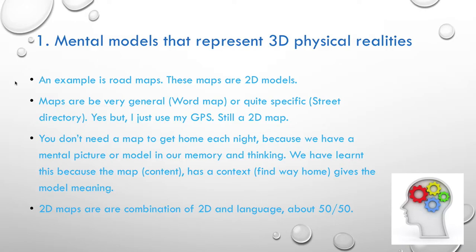We've learnt something because the map, the content, has a context — its context is finding our way home, and it has meaning. 2D maps are a combination of two dimensions and language, about 50-50. They've got about 50% mental modelling and about 50% language, so we can use some of that skill to build mental models.